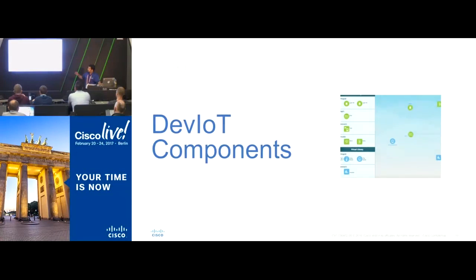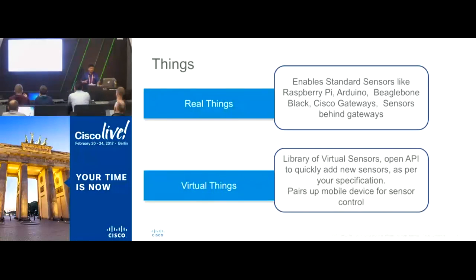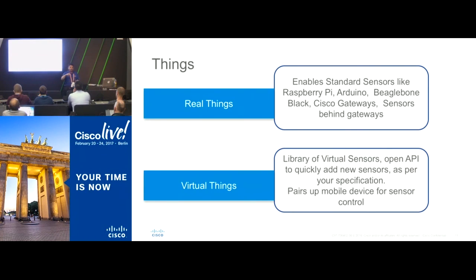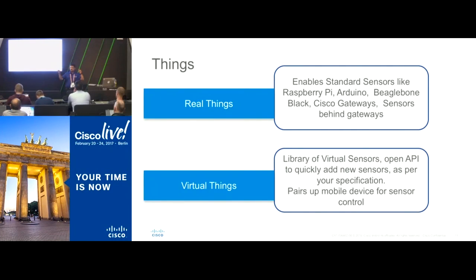I'm going to give you a demo showing the different components. In the 'things' category we have real things — Raspberry Pi, actual sensors, refrigerators, lights, telepresence systems. From tomorrow onwards we'll have a DevIoT booth in the corner where I can show you some integrations with telepresence. In room control, on the telepresence touch panel, you can say 'turn on the lights' and actually turn on the ceiling lights or bring the blinds down.